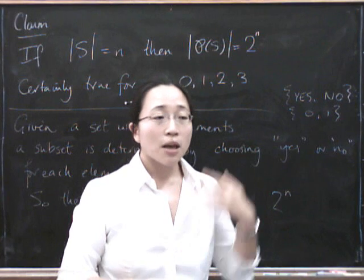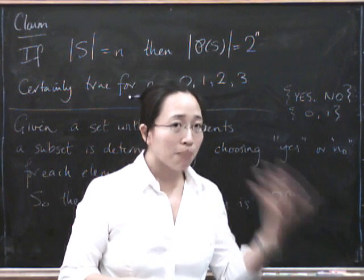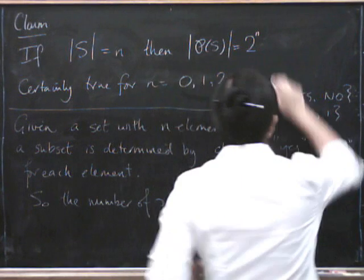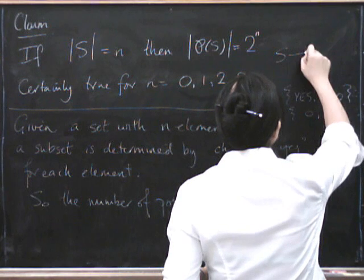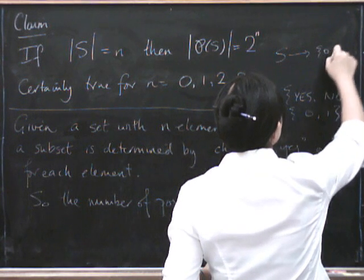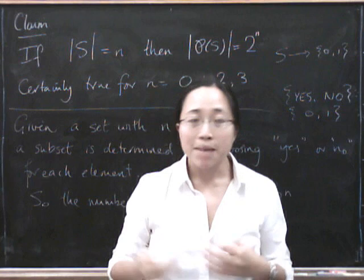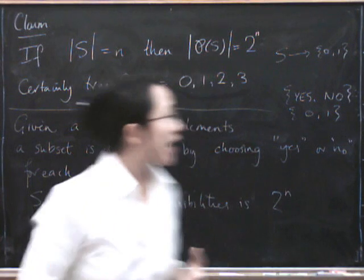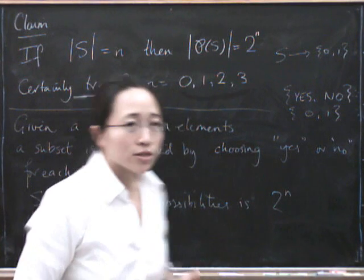And so in the end, each of those maps, each of those mappings, so we take S and we map everything to the set {0, 1}. Each of those implicitly determines a subset of S, and that's called a characteristic function.